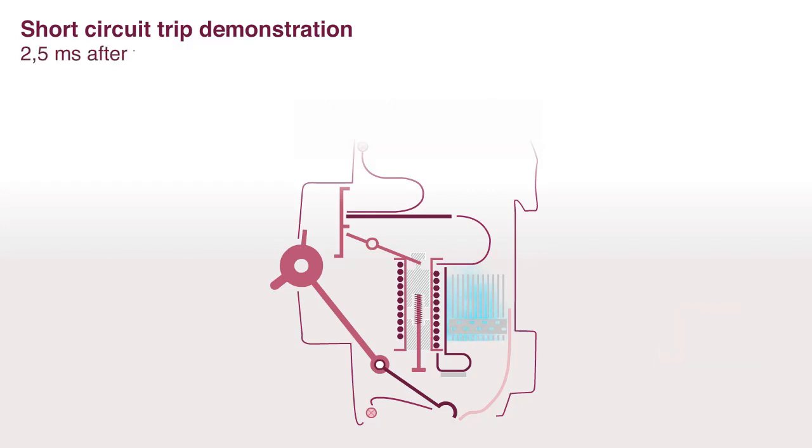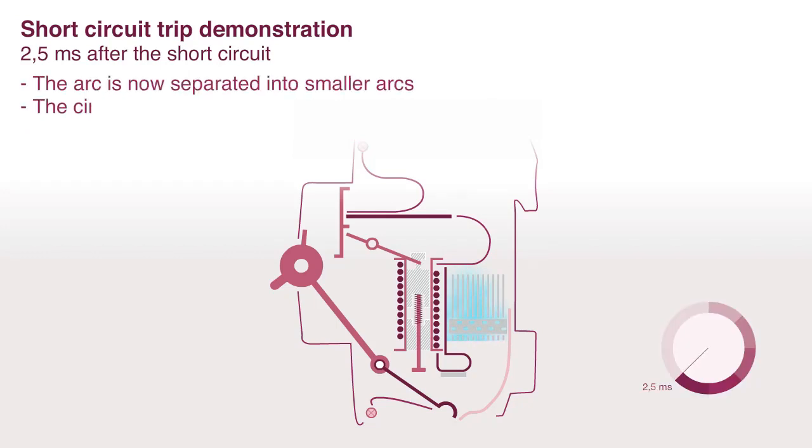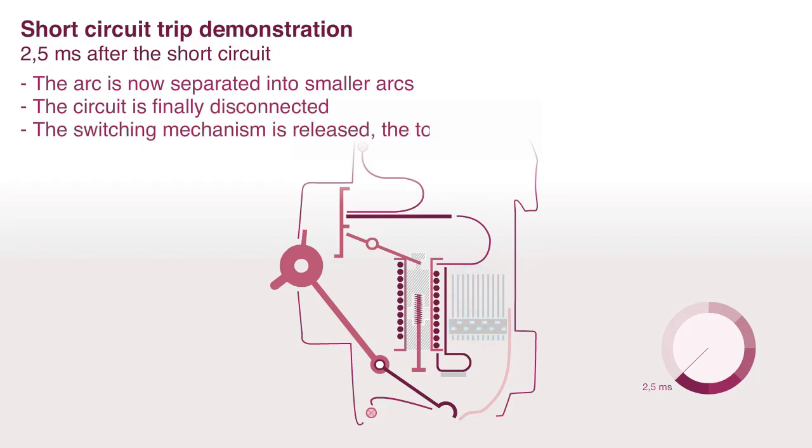Two point five milliseconds after the short circuit, the arc is now separated into smaller arcs. The circuit is finally disconnected. The switching mechanism is released and the toggle is in the off position.